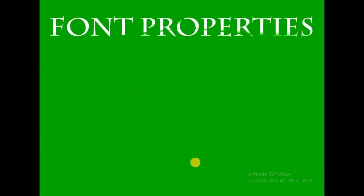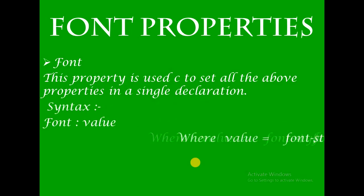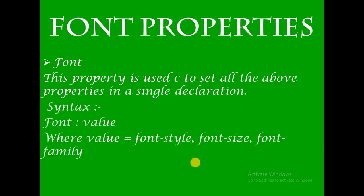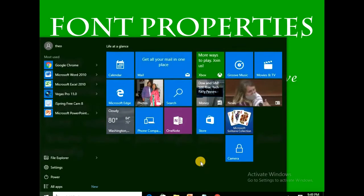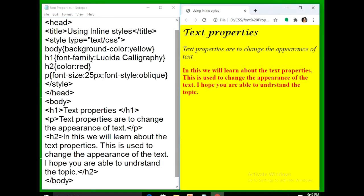The next font property is the shorthand font property. This property is used to set all the above properties in a single declaration. The syntax is: font: value, where value includes font-style, font-size, and font-family together. Let's see with an example — I have font-size, font-style, and again I am adding font-family.